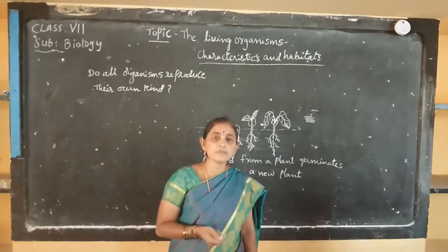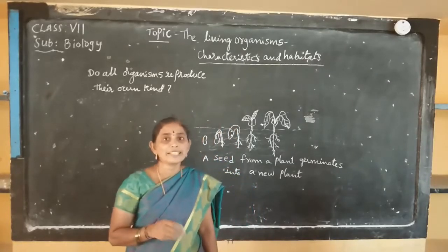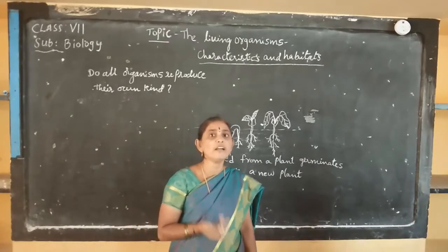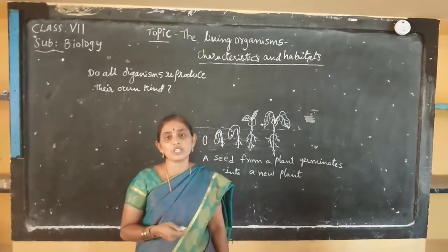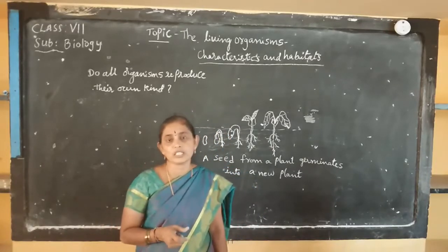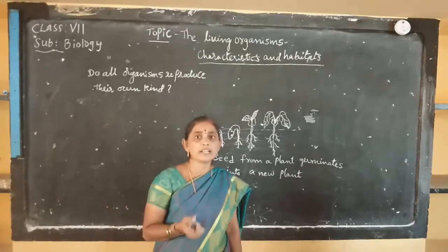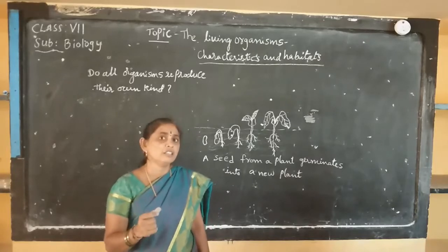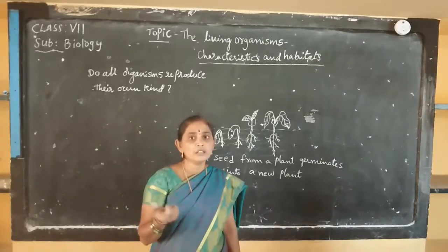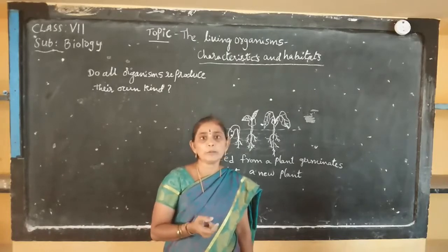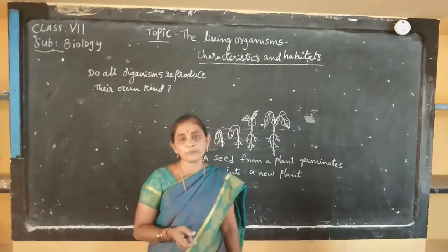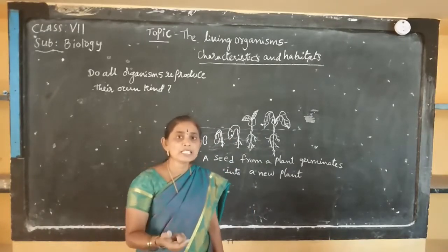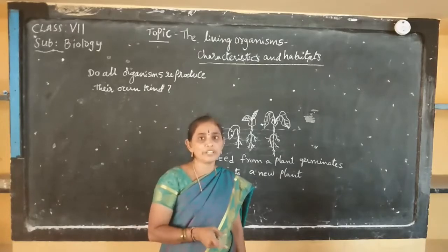Next, living organisms and excretion. The process of getting rid of wastes by an organism is known as excretion. Excretion is an essential process for both plants and animals. Plants store their waste secretions and secrete them through their stems. For example, rubber plant is secreting latex through its stem. Neem plant is secreting gums. Different plants secrete their wastes in different ways.